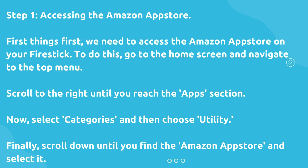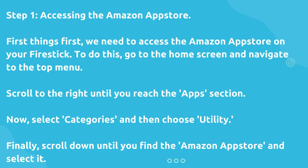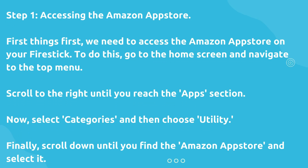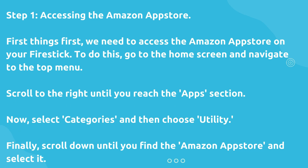Step 1: Accessing the Amazon App Store. First things first, we need to access the Amazon App Store on your Fire Stick. To do this, go to the home screen and navigate to the top menu. Scroll to the right until you reach the App section. Now select Categories and then choose Utility. Finally, scroll down until you find the Amazon App Store and select it.